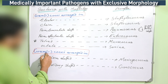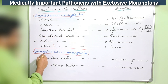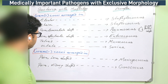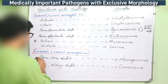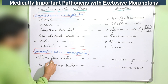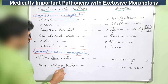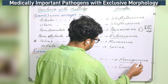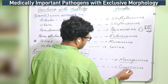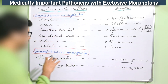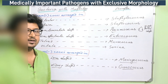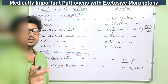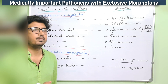Now coming to gram-negative cocci. They can exist in two forms, both in pairs. The first is the lancet-shaped pair — example is Meningococcus — and the second is the kidney-shaped pair — example is Gonococcus. These specific morphological characteristics help you to identify the bacteria in the laboratory under the microscope.